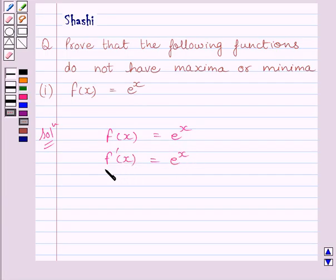Now, to find all the points at which f'(x) is equal to 0, we will put f'(x) equal to 0. Now f'(x) is equal to 0 implies e raised to the power x is equal to 0, which is not possible.